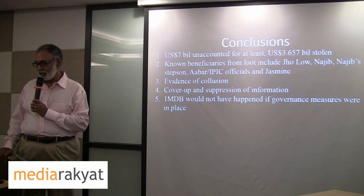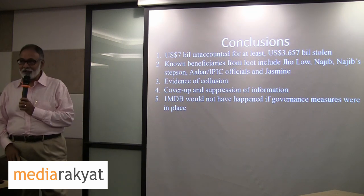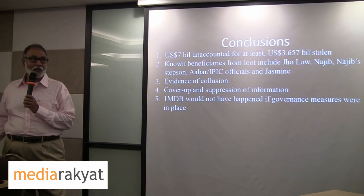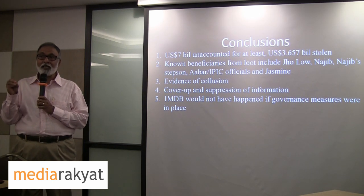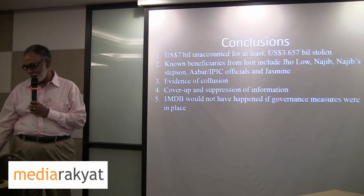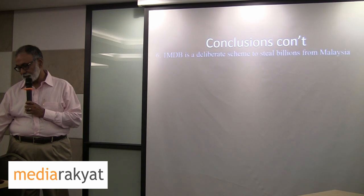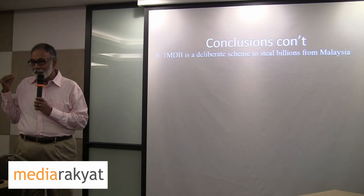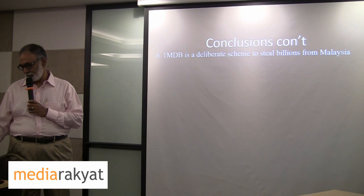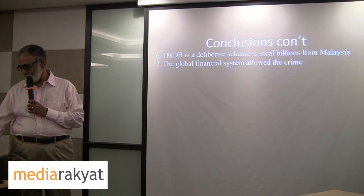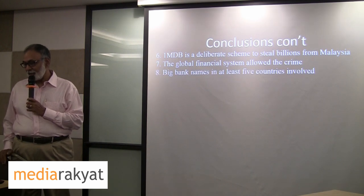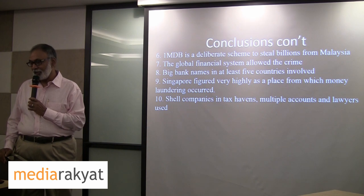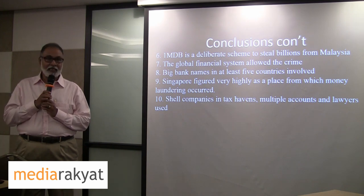1MDB would not have happened if governance measures were in place. If you look at Khazanah Nasional, for instance, every company has got to comply with layers of governance requirements. But strangely, for 1MDB this was not required at all — it operated outside the governance requirements already established for government corporations. 1MDB is a deliberate scheme to steal billions from Malaysia. It is deliberate — there is no accident. The evidence shows it was set up to steal money from Malaysians. The global financial system allowed and was complicit in the crime. Big bank names in at least five countries were involved. Singapore figured very highly as a place from which money laundering occurred, and shell companies in tax havens, multiple accounts and layers were used. These are the key conclusions of the report.